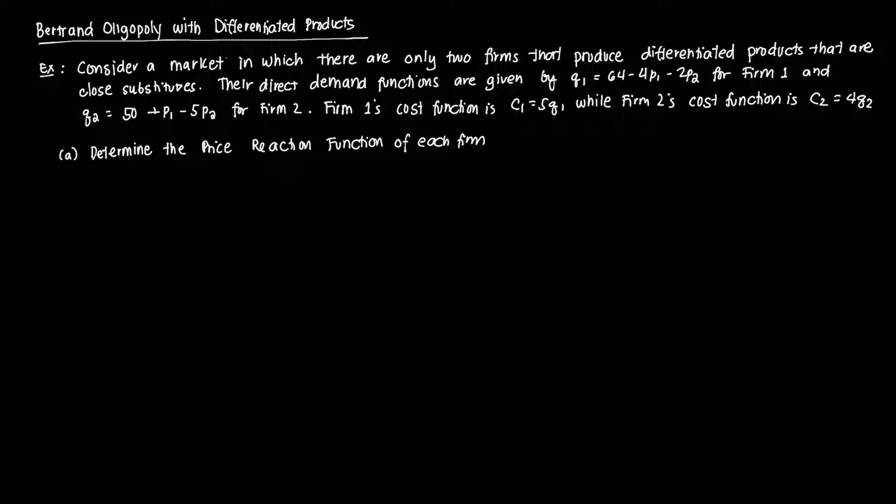Recall from our past video that in the Bertrand oligopoly, firms still act independently — this is still a non-collusive oligopoly — and instead of setting output, they set prices. The main goal is to determine the price reaction function of each firm. Each firm's demand is essentially some function of its own price and what it thinks the rival firm will set. We'll do that for a duopoly where firms produce differentiated products that remain close substitutes.